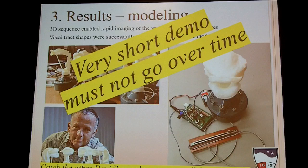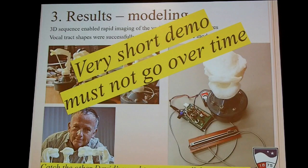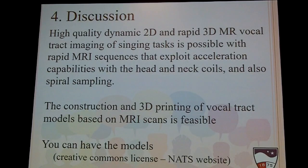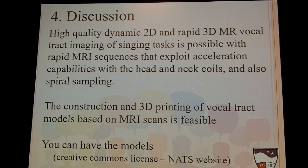Here's a very short demo. My duck call is standing in — these models fit onto a speaker driver, but the duck call is easier. Sten was talking about this looking like a cobra yesterday. You can have the CAD files and send them to a 3D printer over the internet for $30 and have models of these vowels in your voice studios. High-quality dynamic 2D and rapid 3D MRI vocal tract imaging is actually possible. We got good results with commercially available coils — we didn't have to invest $50,000 in dedicated laryngeal coils. The construction and printing of 3D vocal tracts is feasible, and you can have the models.